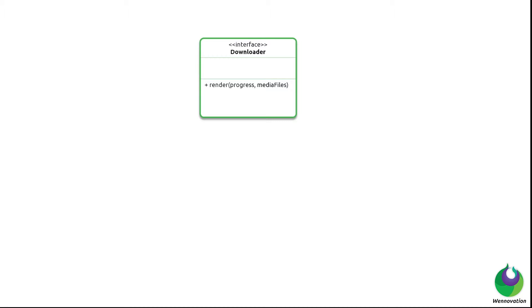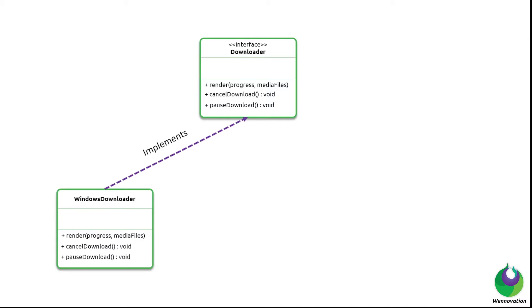For example, there's going to be a render method for our downloader which takes a progress parameter — how much of the files have been downloaded — showing the progress in percentage and the media files being downloaded, then rendering the downloading progress into the view. We can also have a cancel download method to cancel current downloads in progress, and a pause download method.